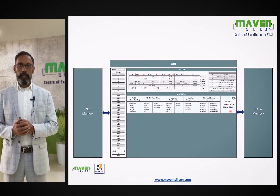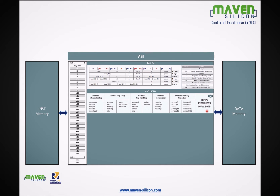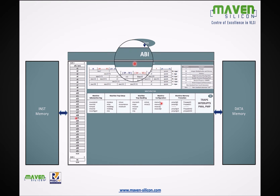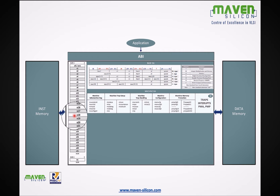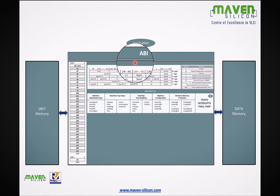RISC-V provides an Application Binary Interface (ABI) to interface with the AEE — Application Execution Environment. ABI includes user level ISA and machine ISA. The application developer will use ABI to implement the application. ABI provides the interface and necessary function calls — for example, how software developers can use the registers: which register can be used as stack pointer, global pointer, function arguments, or return values. All these things are defined in the ABI.